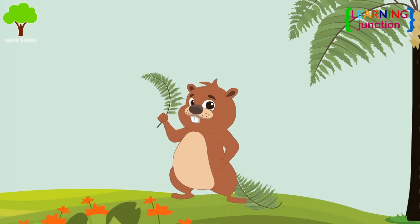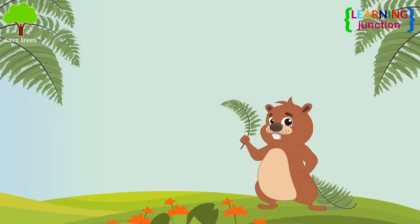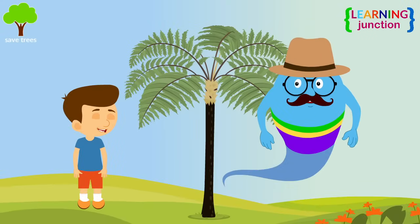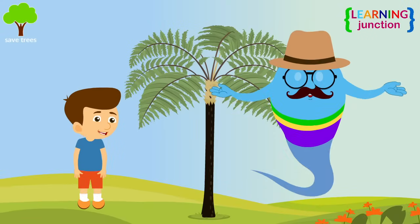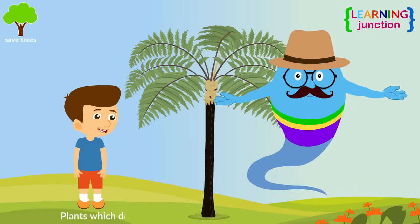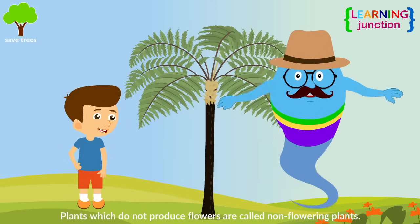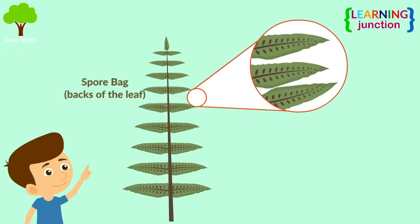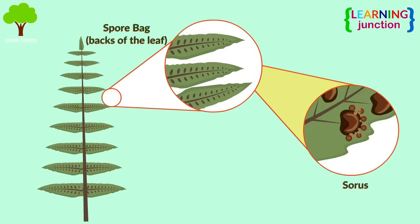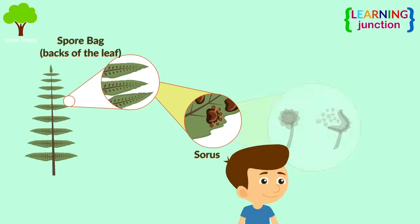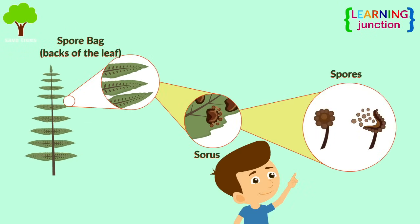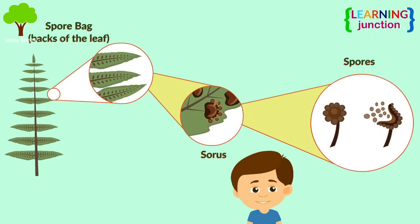See this mountain beaver happily playing with the fern leaves? Fern plants do not use flowers to reproduce. This type of plant, which does not produce flowers, is called a non-flowering plant. The spore bags are located on the back of the leaf — these are sori, the groups of sporangia which contain spores, and these spores are used in reproduction in non-flowering plants.